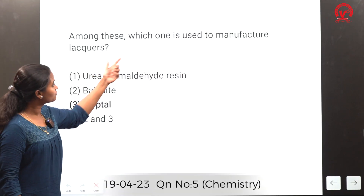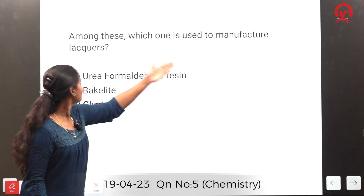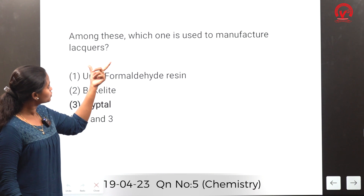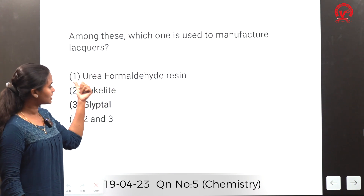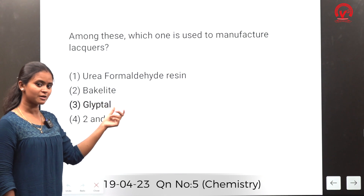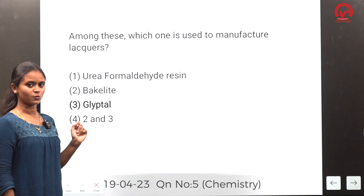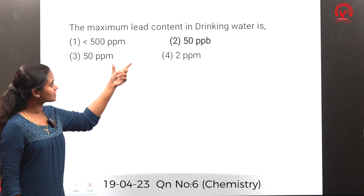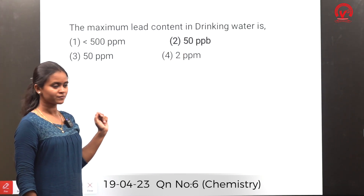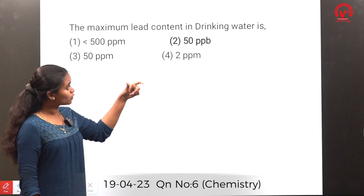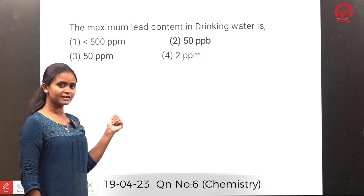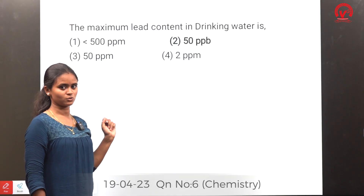Among the given options, glyptol is used to manufacture lacquers, and is also used in the manufacturing of paints. The maximum lead content in drinking water is 50 ppb; above 50 ppb it will damage the kidney, liver, and reproductive systems.